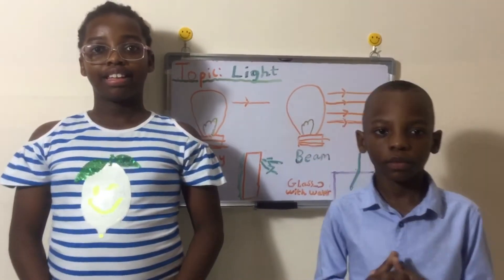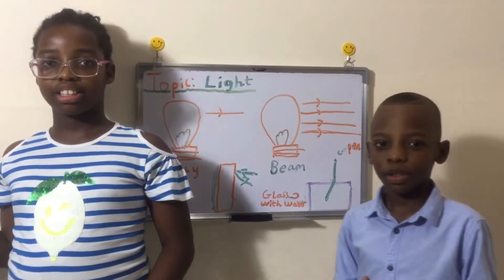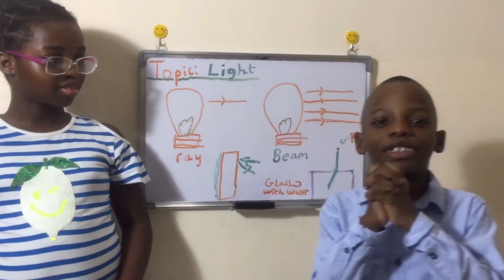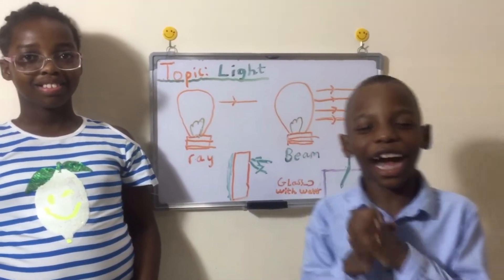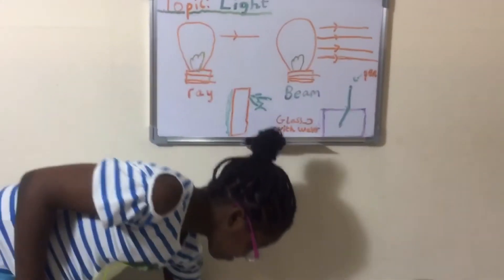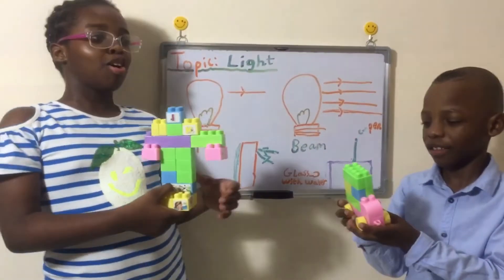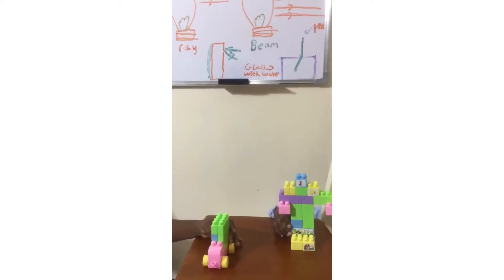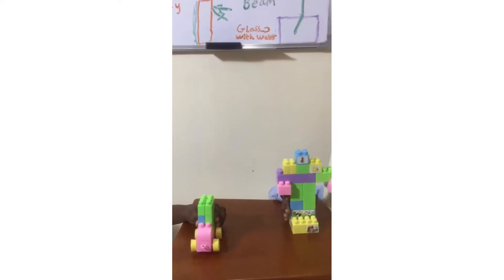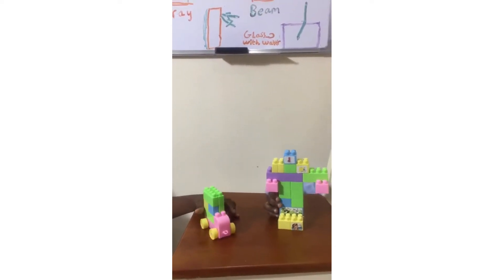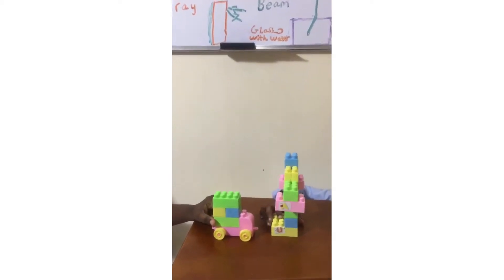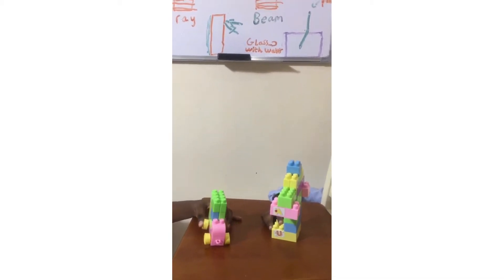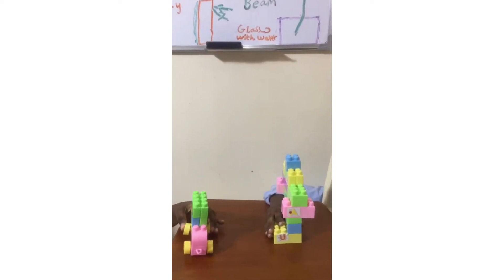So next is reflection of light. But before that we have some guests. Please welcome them. So thank you, our human friends, for allowing us to teach you about reflection of light. First, what is light? Light is the natural agent that stimulates sight and makes you see.